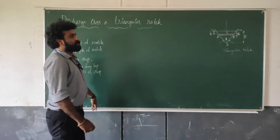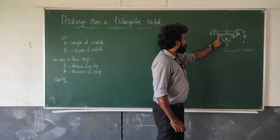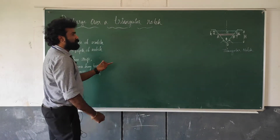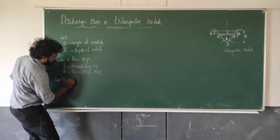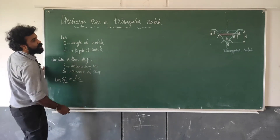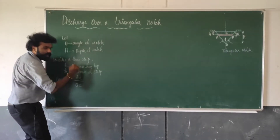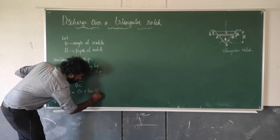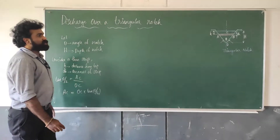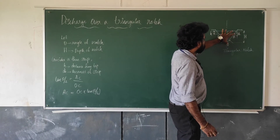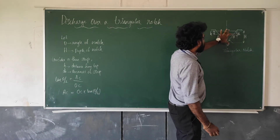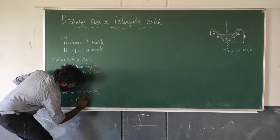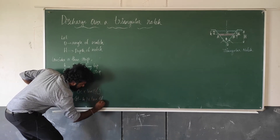The angle AOC is theta by 2 (half of total notch angle). Using trigonometry: tan(θ/2) = opposite/adjacent = AC/OC. Therefore, AC = OC × tan(θ/2). Now, OC is the depth from the apex O down to the strip level. The total depth is capital H, and the strip is at small h from the top, so OC = H − h. Thus, AC = (H − h) × tan(θ/2).